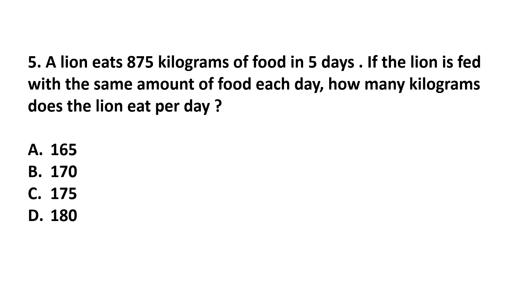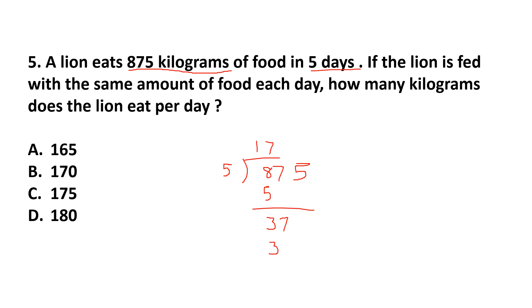Question 5: A lion eats 875 kilograms of food in five days. If fed the same amount each day, how many kilograms does the lion eat per day? 875 divided by 5: five ones are five, eight minus five is three, bring down seven — five sevens are thirty-five, bring down five — five fives are twenty-five. The lion eats 175 kilograms per day. Answer: option C.